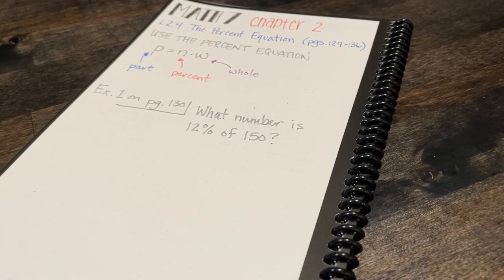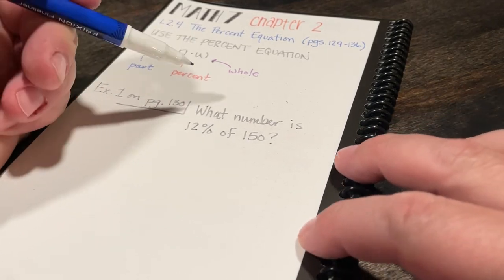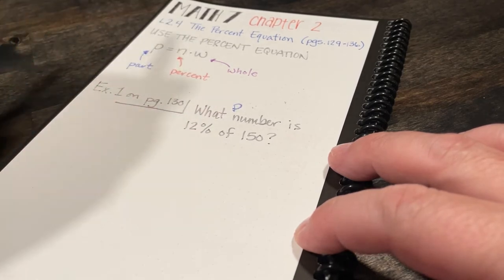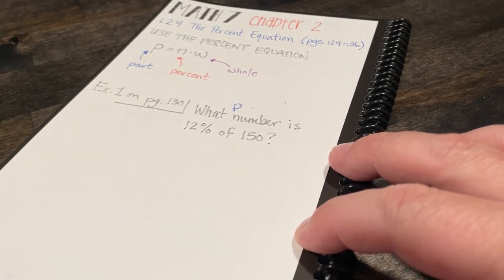So let's take a look at lesson 2.4, the percent equation. We're going to be on pages 129 through 136. And the percent equation is part equals n times w. Part, or p, equals percent times w.